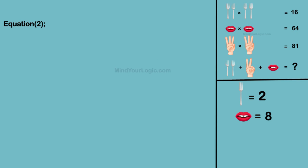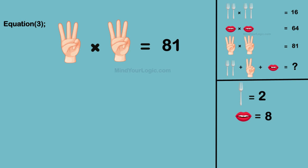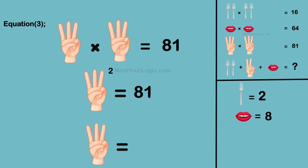Similarly, solving equation 3: 3-fingers hand multiplied by 3-fingers hand equals 81. On solving we get the value of a hand with 3 fingers as 9.